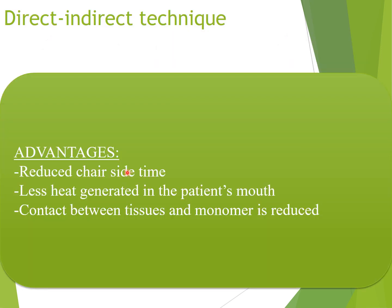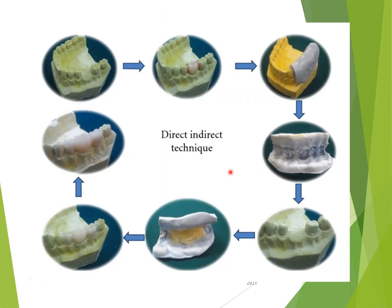Additional advantages of the indirect technique include reduced chair-side time and reduced contact between tissue and monomer. In a combined indirect-direct approach: you have a cast with the missing teeth after taking an impression of the patient, place temporary teeth, and make a putty index. You can see the occlusal surface of the putty index. Load the temporary material, place it, and the provisional restoration is ready. Trim it off and place it in the patient's mouth.